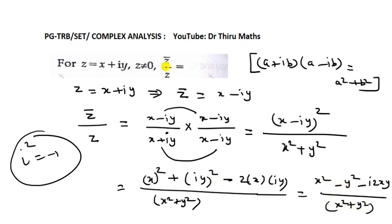Here the final answer: Z bar divided by Z equals (X squared minus Y squared minus 2iXY) divided by (X squared plus Y squared). Thank you.